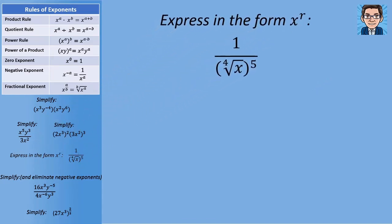This next problem says express in the form x to a power. We want to convert into exponential form. When we take the 4th root of x to the 5th, the exponent is the numerator and the root is the denominator, so this is going to be 1 over x to the 5/4ths. We're asked to put it into a single x to a single exponent value, so 1 over an exponent is the same as that exponent negative — we get x to the negative 5/4ths.